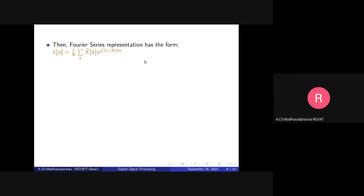The Fourier series representation has the form: x̃(n) = (1/N)·Σ_{k} X̃(k)·e^(j·2π/N·k·n). The period of each harmonic is capital N, and the signal on the left side is also periodic with period capital N, so both have the same period.